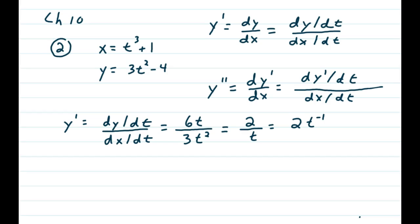It's also a good idea to simplify these things for the second step. So 6 over 3 is 2. You have a t on top, a t squared on the bottom, that's t. And I would bring it up so you don't have a fraction to get 2t to the negative 1.